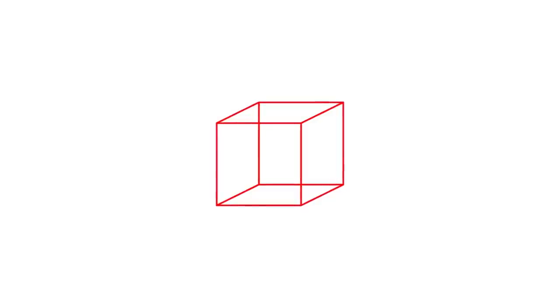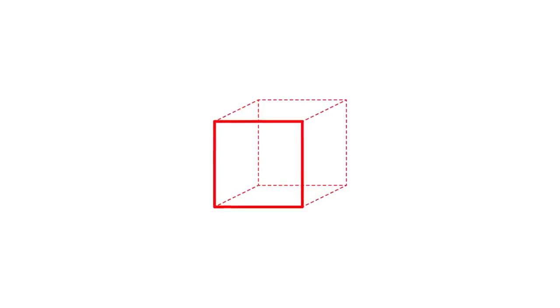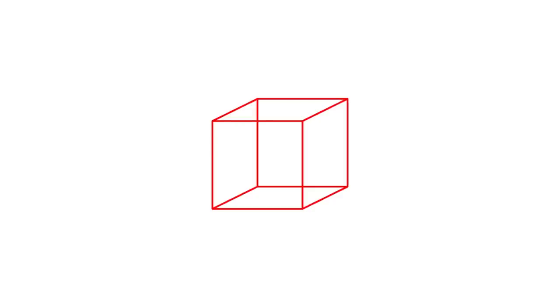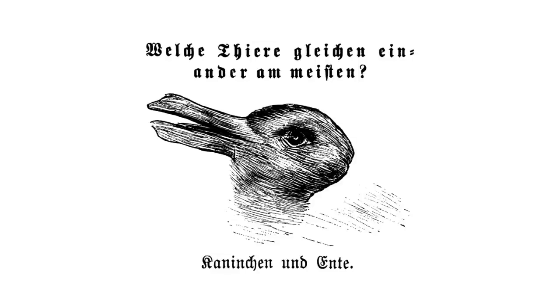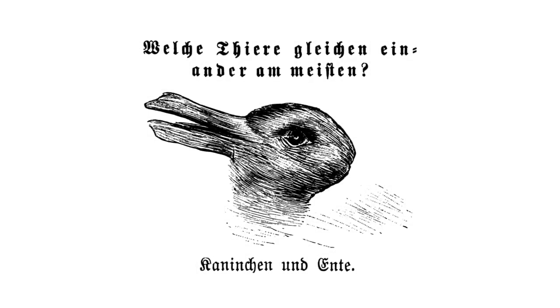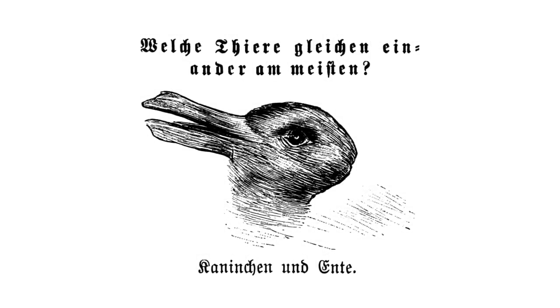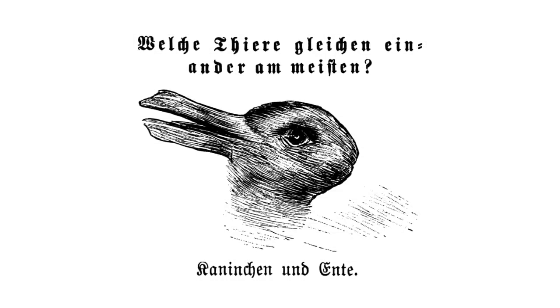If we take the Necker cube, this can be interpreted in one of two ways. You can look at the Necker cube and see the front face as either being on the lower left or in the upper right. You can't see them both at the same time — you can see it one way or another, which is why it's bistable. Another example is called the duck-rabbit illusion — you can either see the figure as a duck or a rabbit. The two little bits are either ears or the duck's bill.